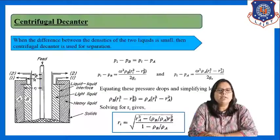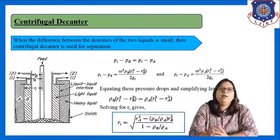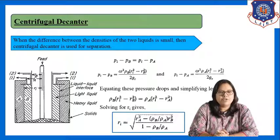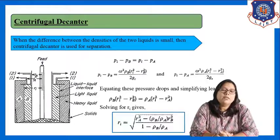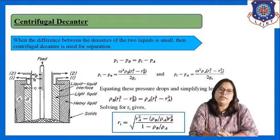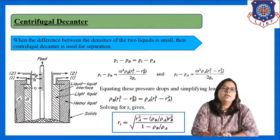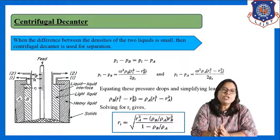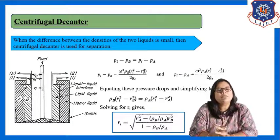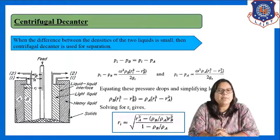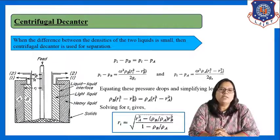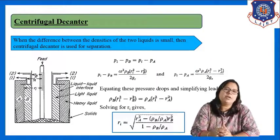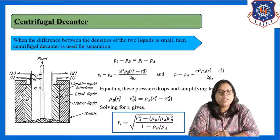Now let us see the other type of decanter, which is the centrifugal decanter. When the density difference between the two immiscible liquids is small, we use the centrifugal decanter. In the centrifugal decanter, the driving force used for separation is centrifugal force, while in the gravity decanter the driving force is gravity. Centrifugal force is much stronger than gravity force, which is why we use the centrifugal decanter for separation of immiscible liquids having a small density difference.